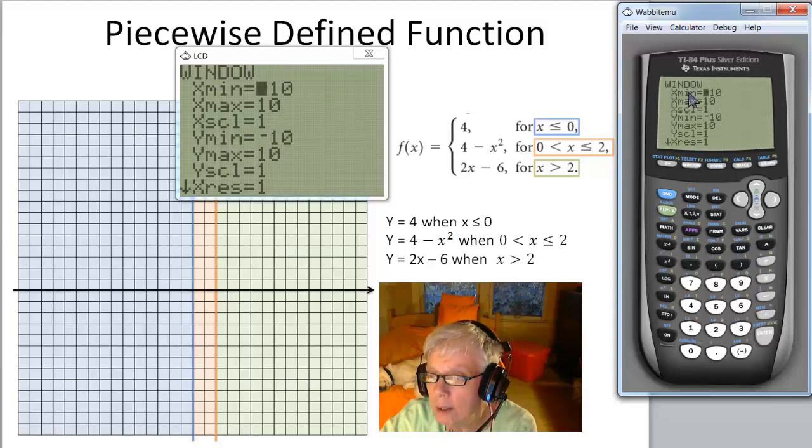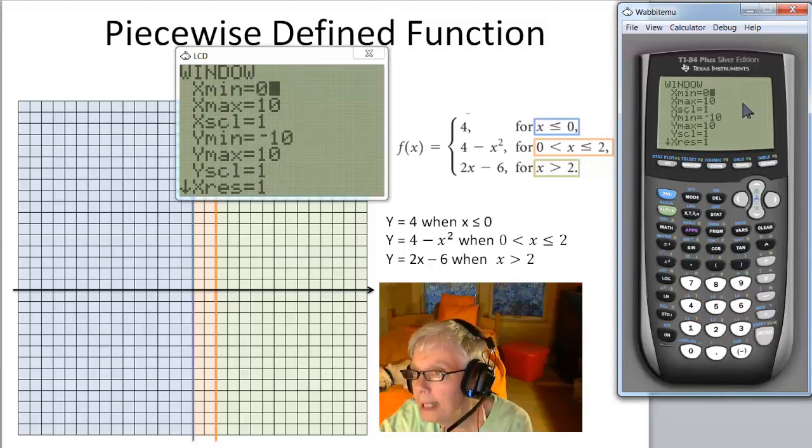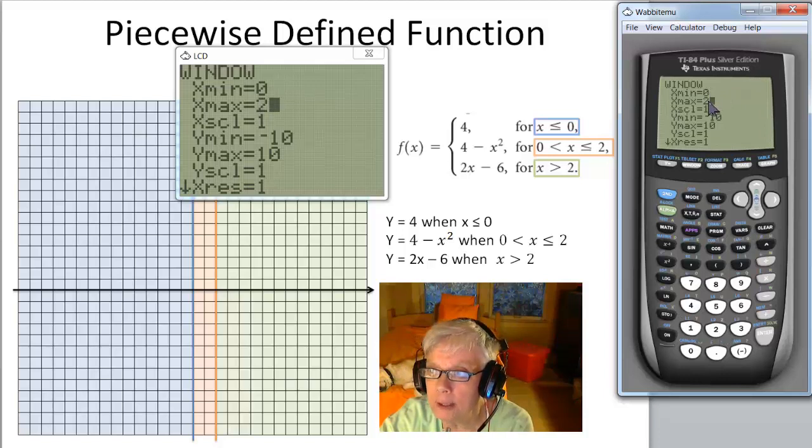We'll make x min, that is the x on the left, we'll make it 0, and we'll make x max 2, so that I'll see the part of the graph between 0 and 2. Now let's graph.